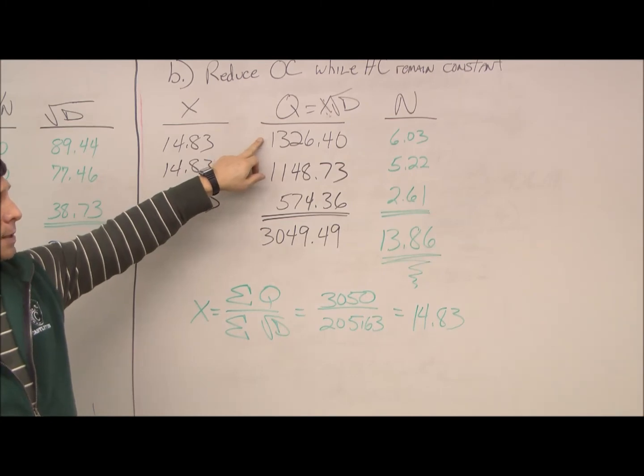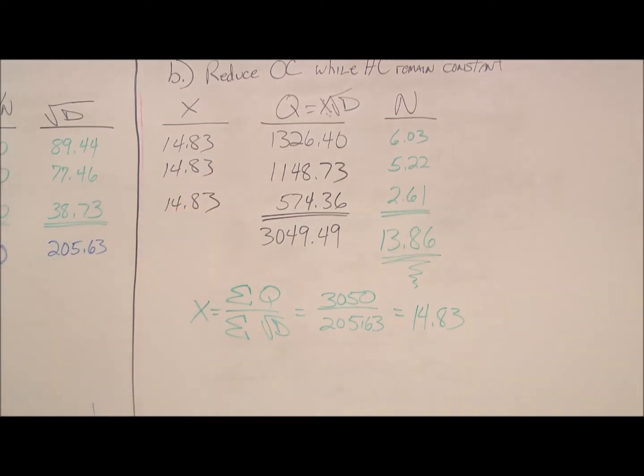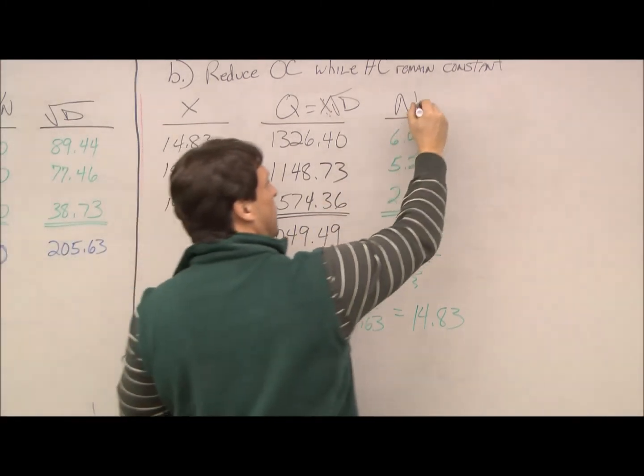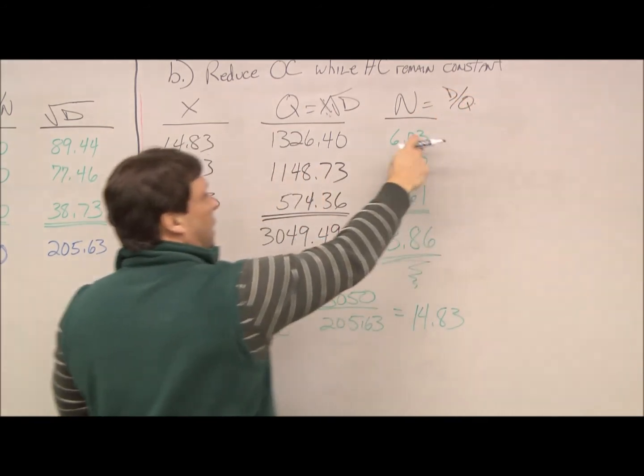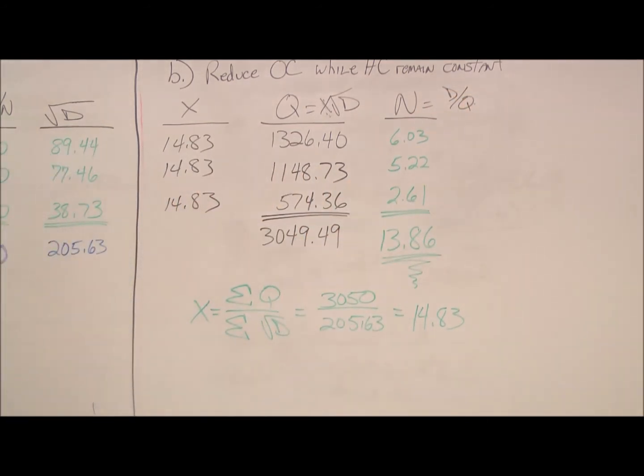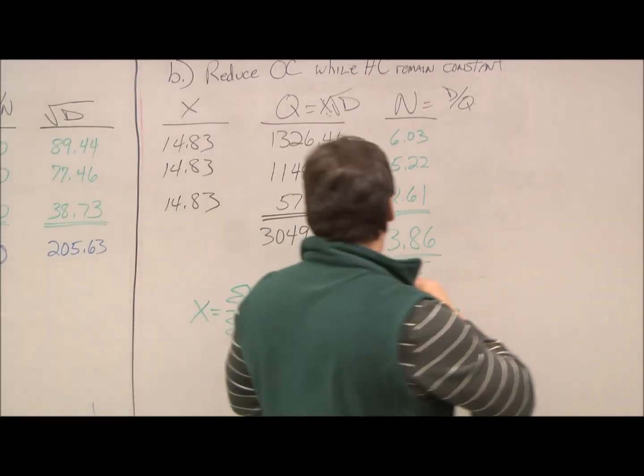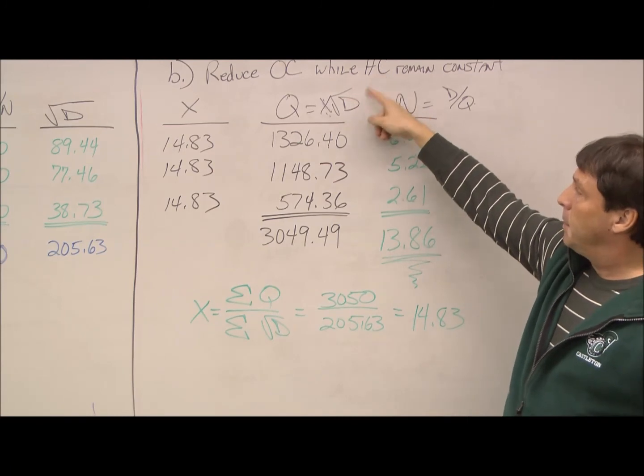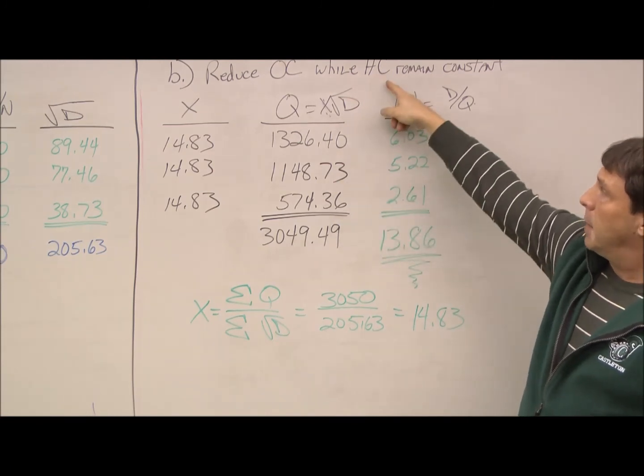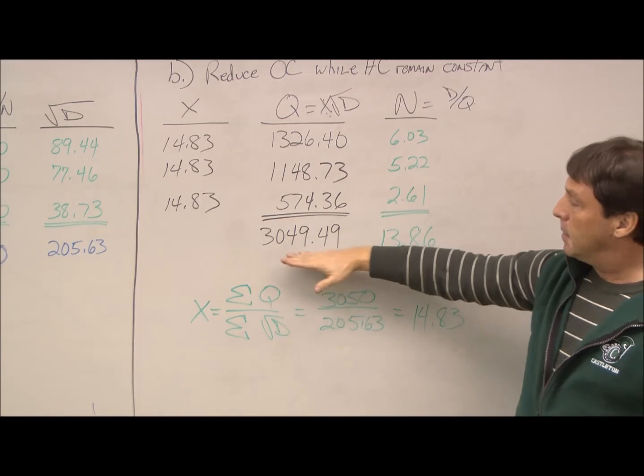And our N is just our D divided by Q. So, what you see with the results here is basically our Q has remained the same.